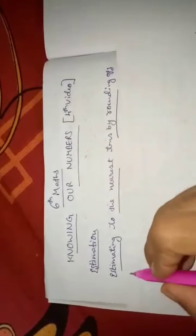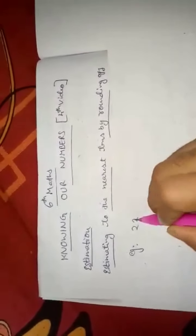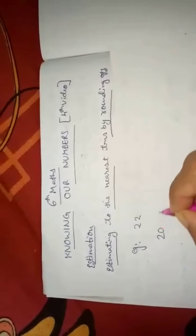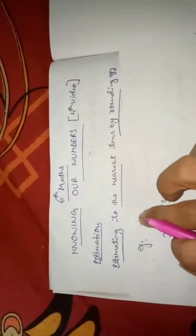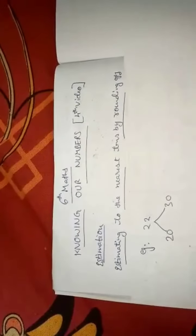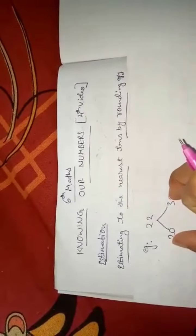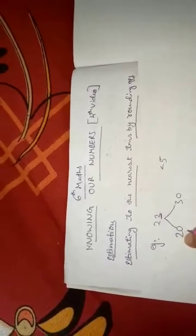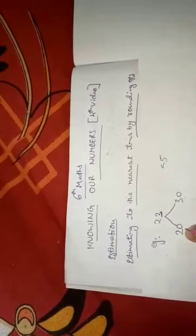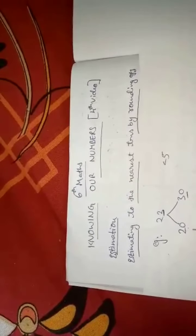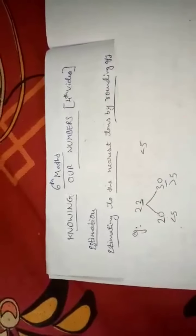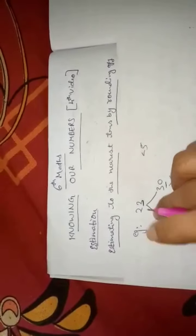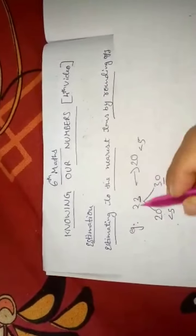Estimating to the nearest tens by rounding off. Estimation means rounding off a number. For example, if you have 22, you have to round off this number either to 20 or to 30. There is a rule: you have to see the unit place. If the unit digit is less than 5, you round off to the previous number — 20. If more than 5, you round off to 30. Here, 22 is less than 5 in the units, so you round off 22 to 20.